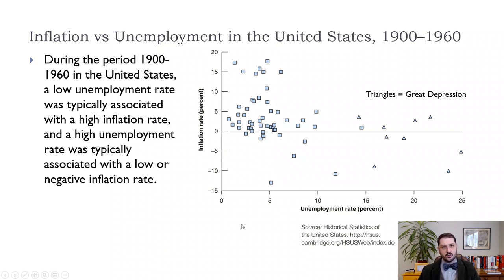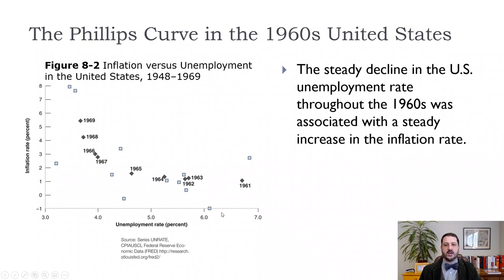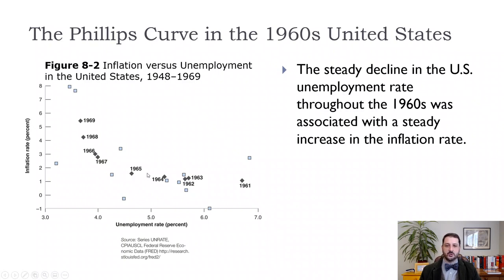When the Phillips curve concept emerged in the 1950s, the Fed began using it to think about the trade-off between unemployment and inflation. Looking at data from 1948 through 1969, the 1960s data points show that in 1961 unemployment was fairly high but inflation was low. As the Fed tried to exploit this relationship, unemployment fell but inflation rose, so that by 1969 inflation was over five percent, with noticeable increases especially after 1965.